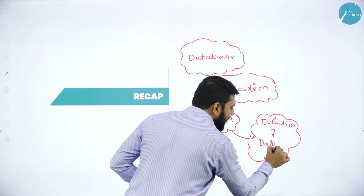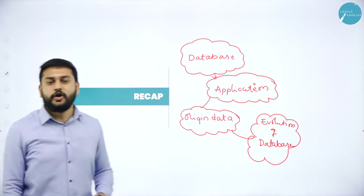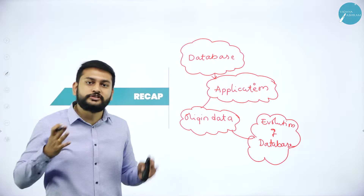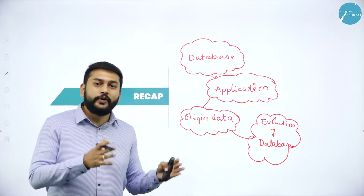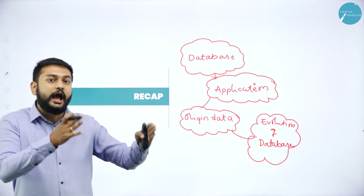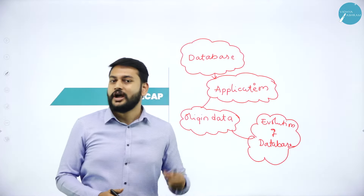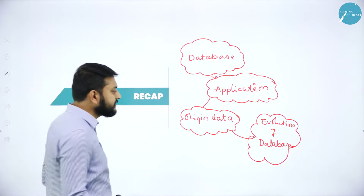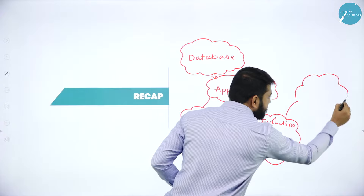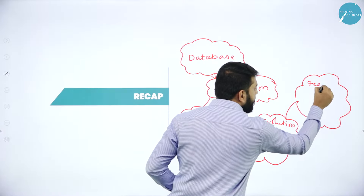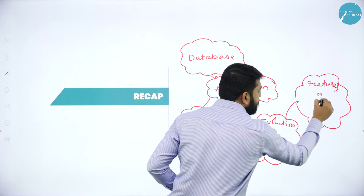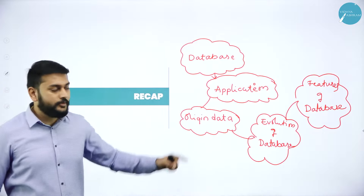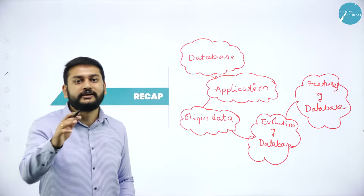After the origin, I started discussing the concept called the evolution of database. I compared two different things: if I store data manually, what problems will I have, and how exactly, in a cost-effective way, I can overcome those problems. After that, I started discussing the features of database — this is very, very important. Why should I have a database is what I explained in the features of database.